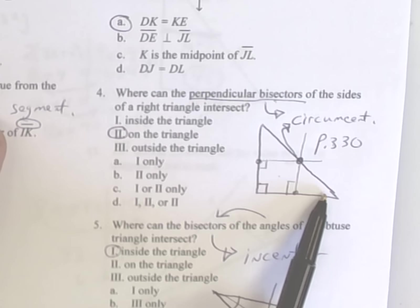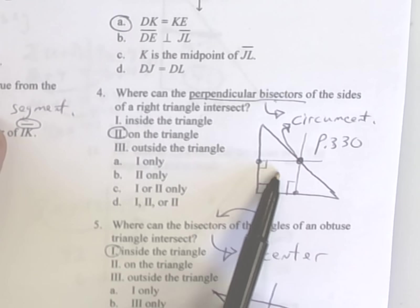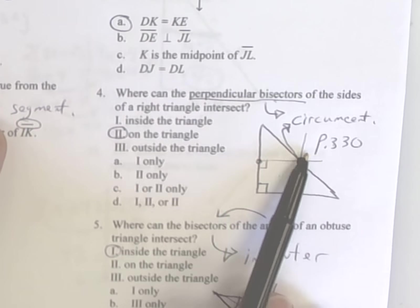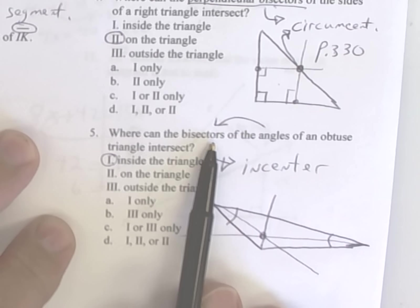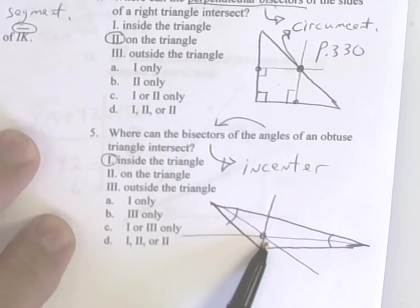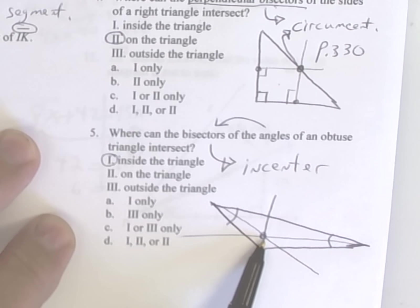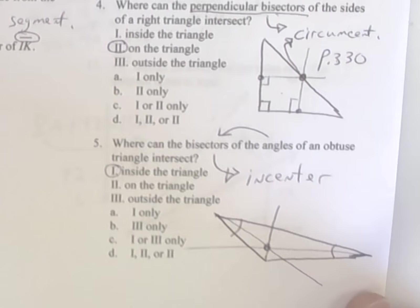Number four: what can the perpendicular bisectors of the sides of a right triangle do? You find the midpoints and draw 90 degrees, and where it hits on a right triangle it hits on the triangle itself. This is basically like the angle bisectors of an obtuse triangle — draw an obtuse triangle, split your angles, and you can see the angle bisectors hit inside the triangle.